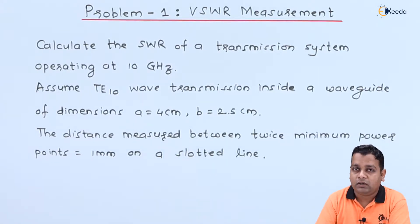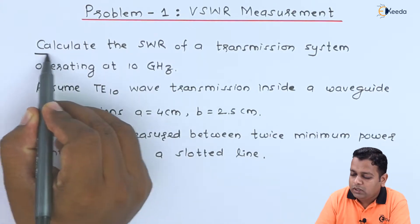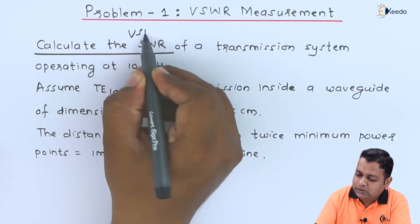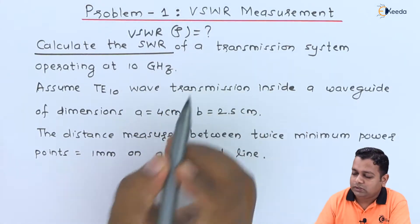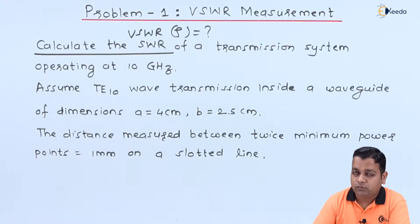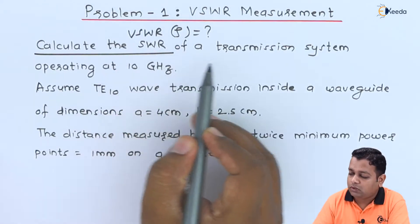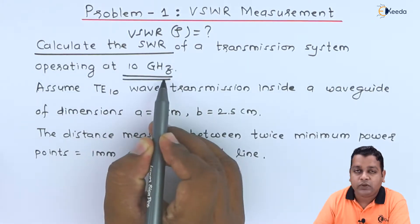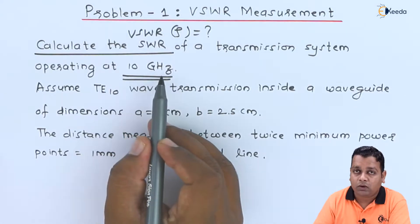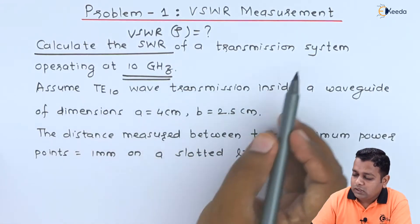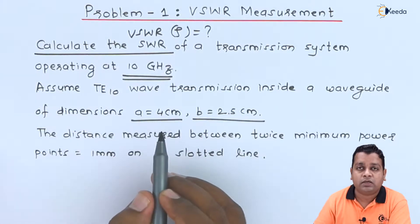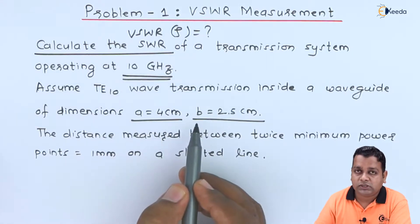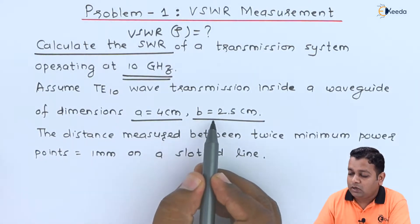We shall first determine what is asked in this problem statement. In the very first line, it is mentioned that we have to calculate the SWR, or simply VSWR, which is generally represented by rho. VSWR rho is what we need to find. The system operates at 10 GHz. We are also provided dimensions a and b, which tells us it is a rectangular waveguide, since a circular waveguide would only have one dimension — the radius.